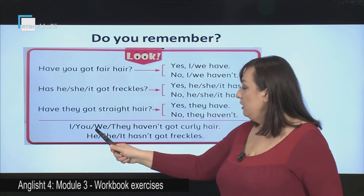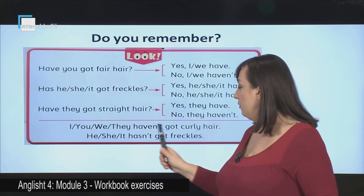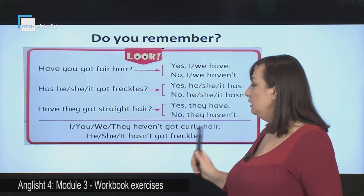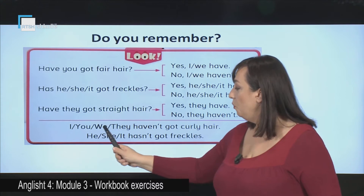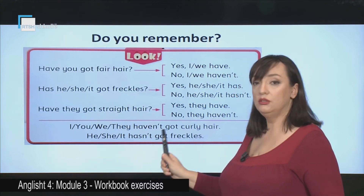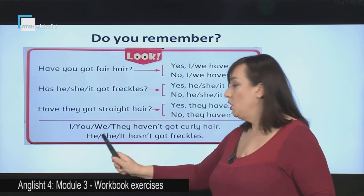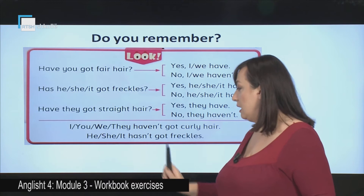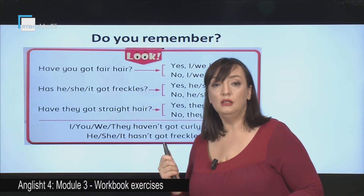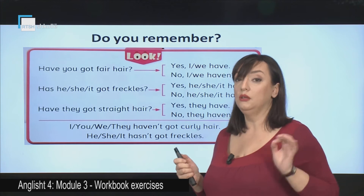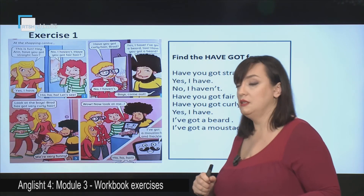And here we have the negative: 'I haven't got curly hair,' 'You haven't got,' 'We haven't got,' 'They haven't got,' 'She hasn't got,' 'He hasn't got,' and 'It hasn't got.' Do you remember? Good. Let's use them in exercises.